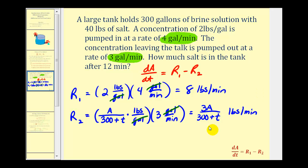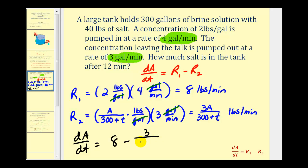So the differential equation to model this situation is dA/dt equals r sub one, which is eight, minus r sub two, which is three divided by the quantity (300 plus T) times A. The reason I'm writing it this way is it's easier to recognize that this is a linear first order differential equation. We also know that A of zero is equal to 40, because at time T equals zero there are 40 pounds of salt in the tank.